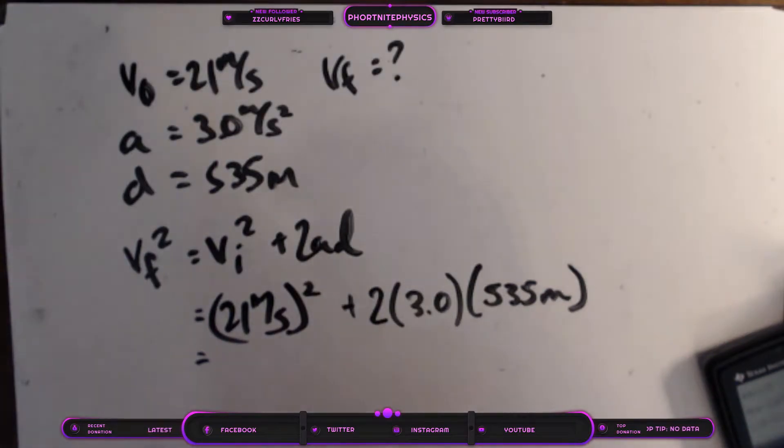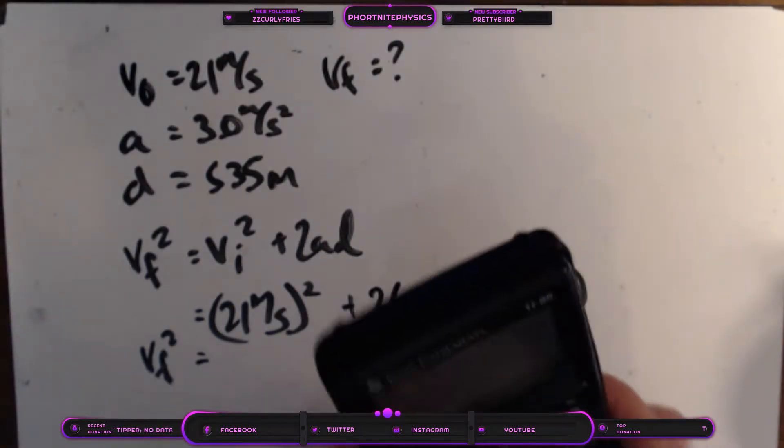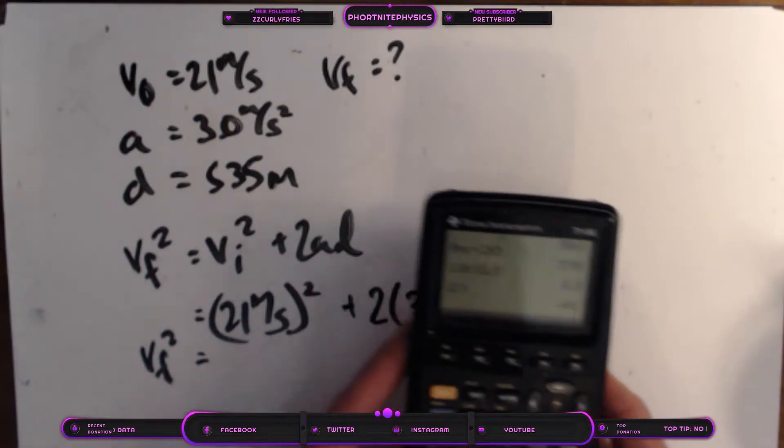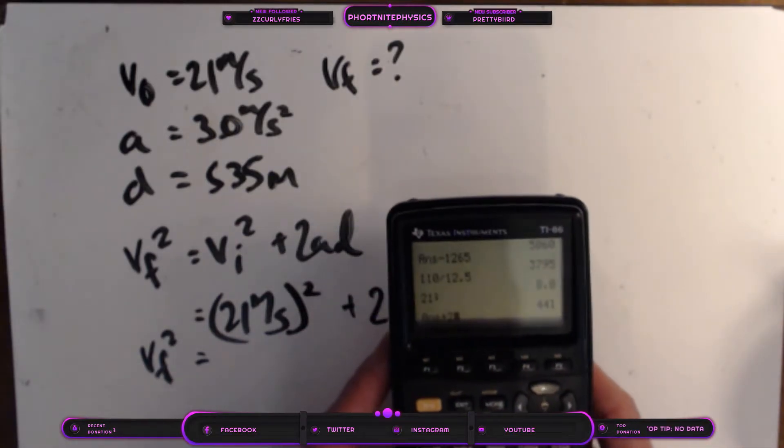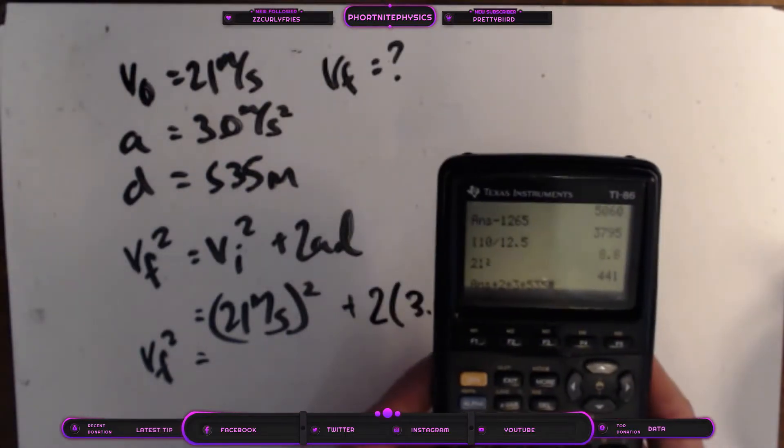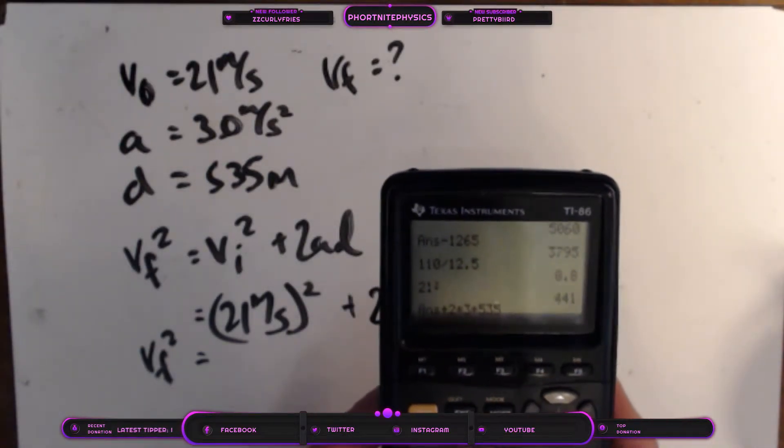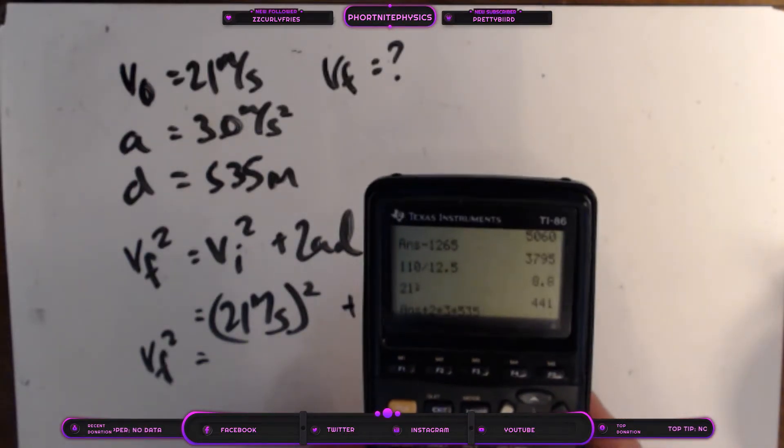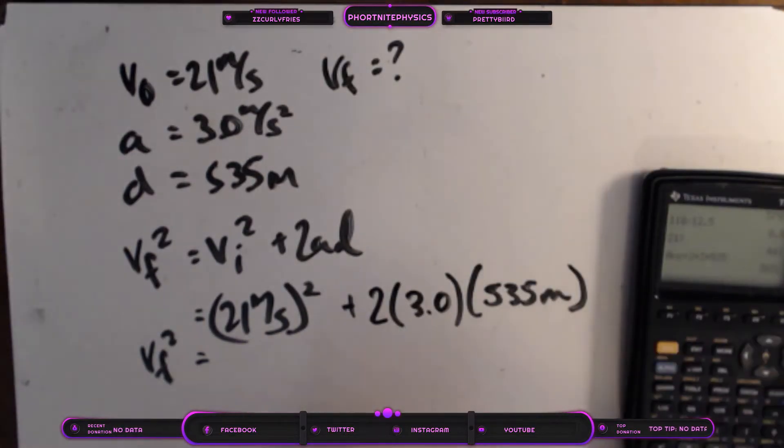So let's go ahead and punch these numbers out and see if that works out. Okay, so we have our final velocity, yeah, final velocity squared equals 21 squared, 441, plus 2 times 3 times 535. Now it's okay to do your math like this in your calculator because of the order of operations. It's going to multiply these numbers together first and then add them up. So that gives us 3651, okay?